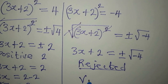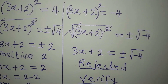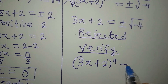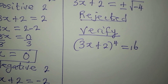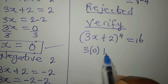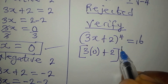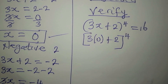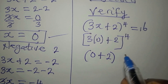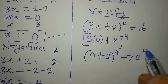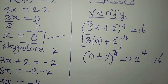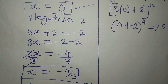Let's verify our work. The original equation is (3x + 2)^4 = 16. For the first solution, x = 0: substituting gives (3 times 0 + 2)^4 = (0 + 2)^4 = 2^4 = 16. This matches the right-hand side, so this solution is confirmed.